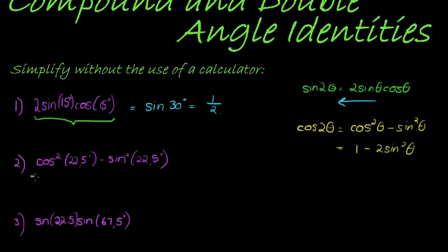It may have also appeared in the form 1 minus 2 sine squared theta. Okay, so this could have also been 1 minus 2 sine squared 22.5. Or, it could have been 2 cos squared minus 1.